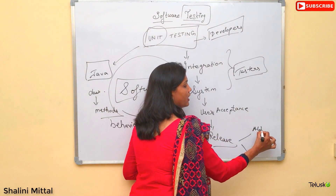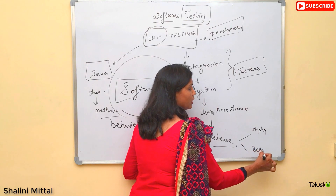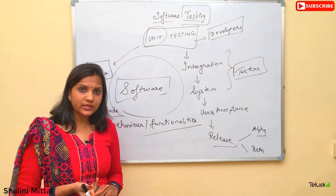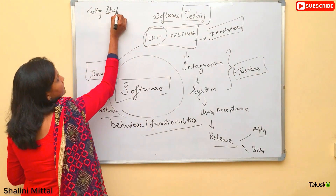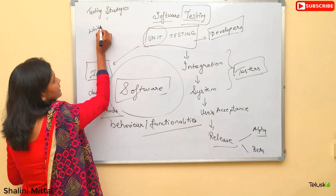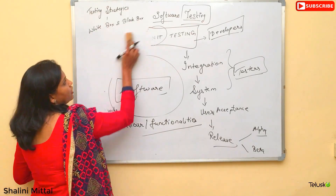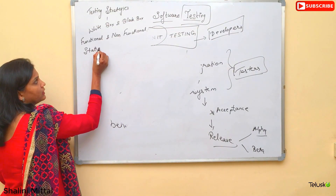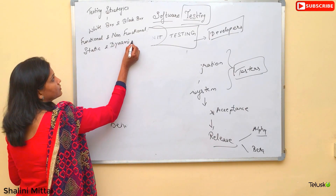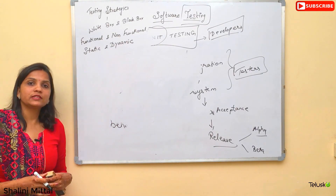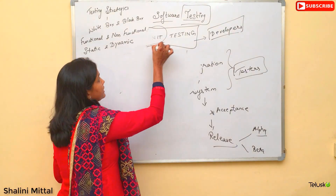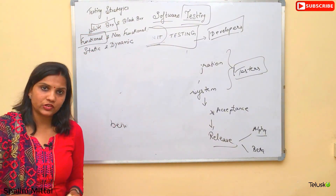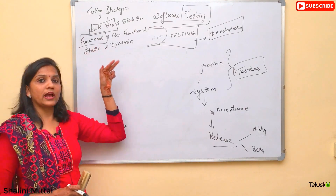For release, there are two versions: alpha and beta. The alpha version is still in the testing phase, and then you have the beta version. There are also testing strategies available, such as white box and black box testing, functional and non-functional testing, and static and dynamic testing. Unit testing is a kind of white box testing where we test the functionalities in our application, and this testing can be static or dynamic.